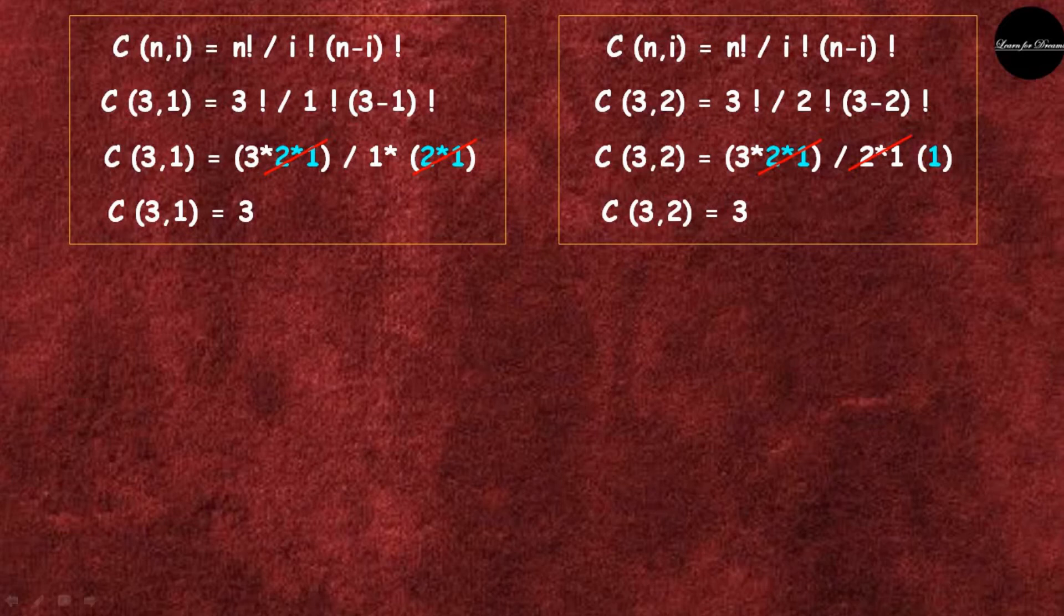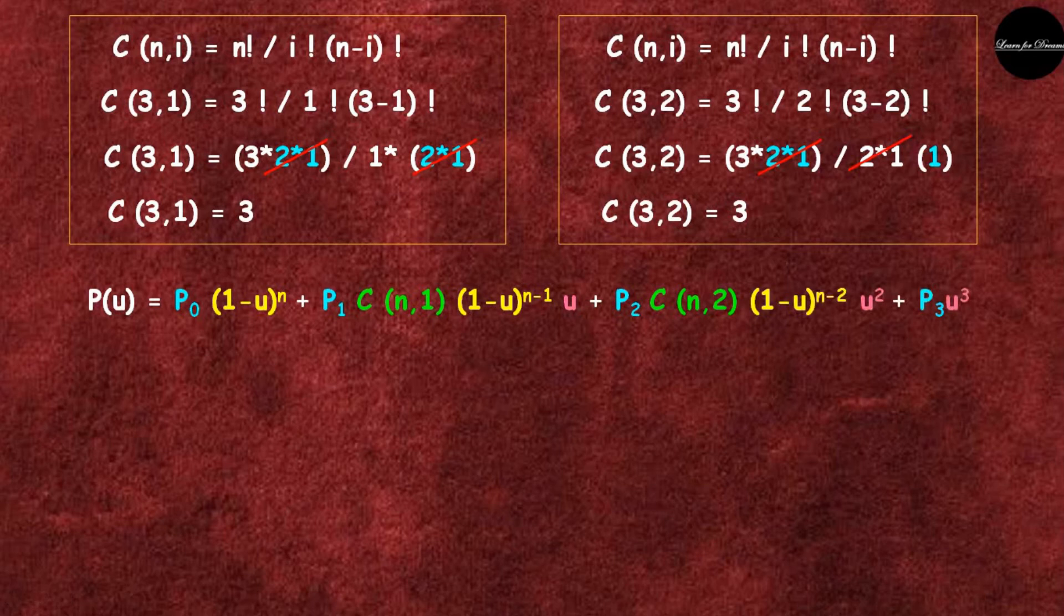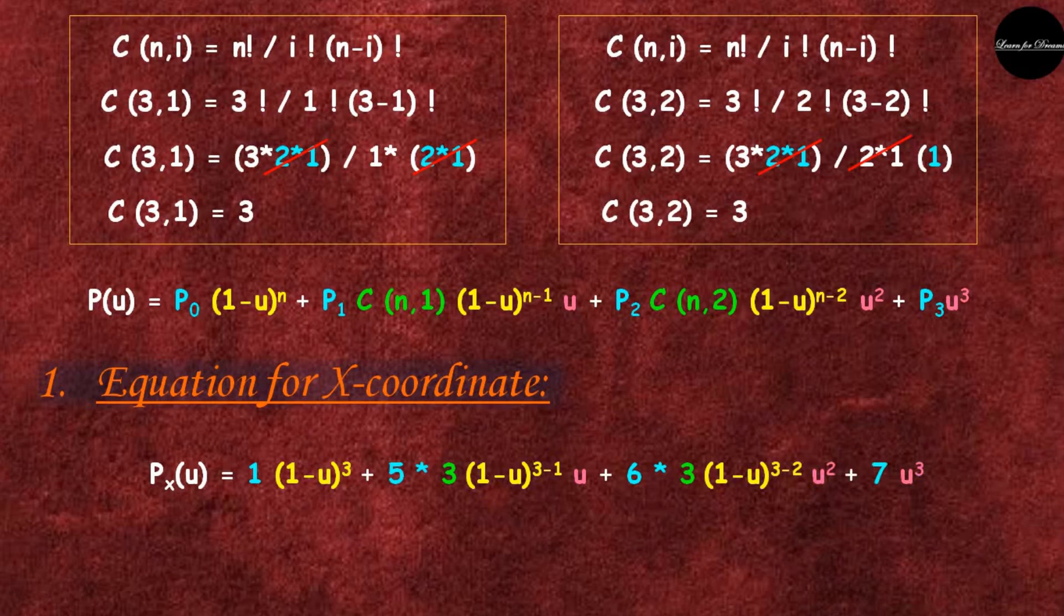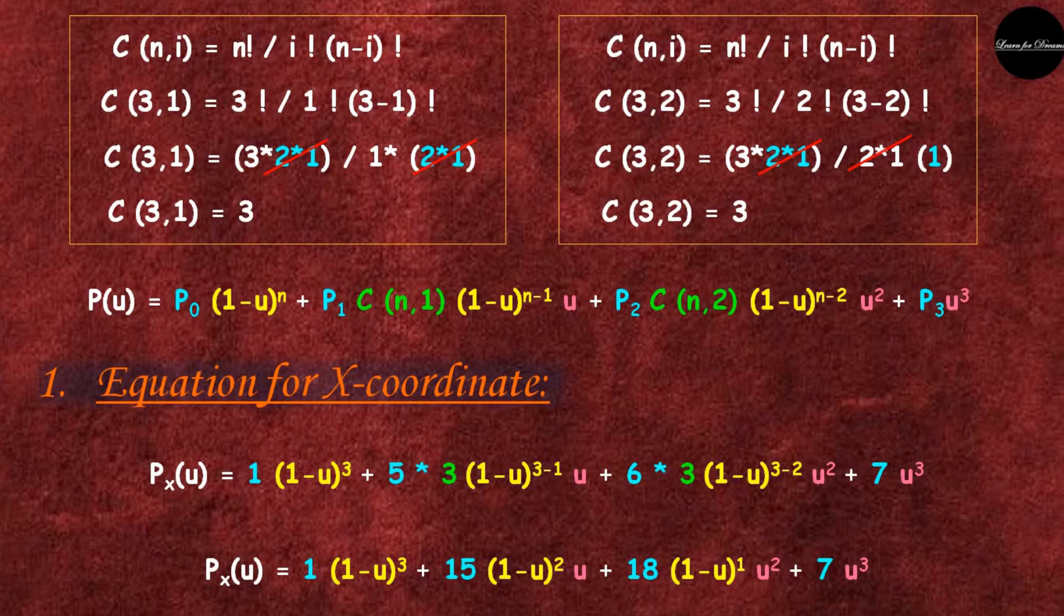This is the polynomial with degree 3. That was the generalized equation. Now let's find the equation for x coordinate. This is the equation: we put the x coordinates of P0, P1, P2, and P3.